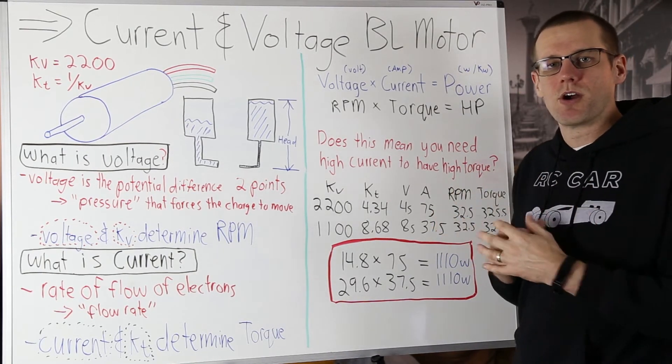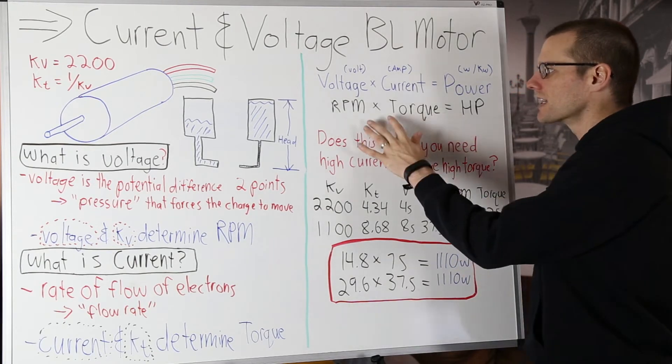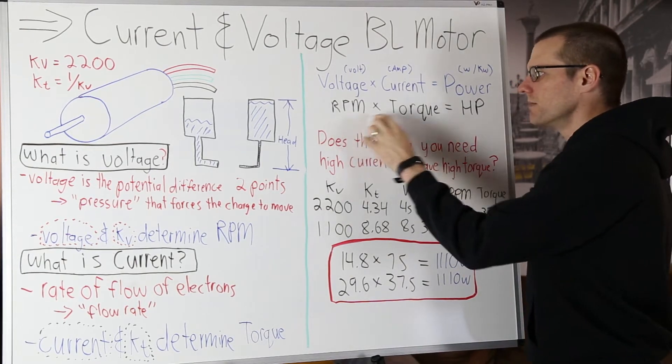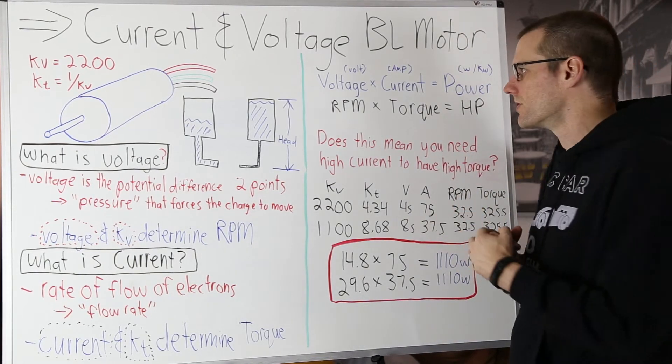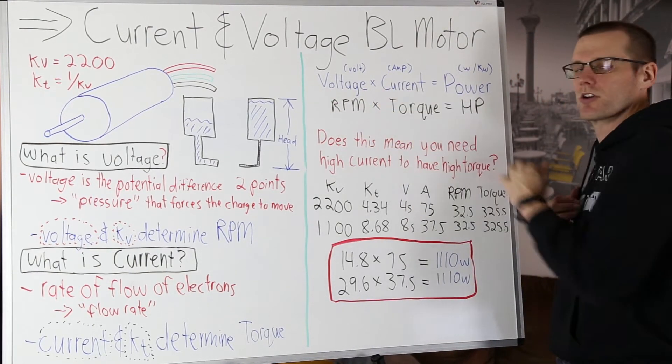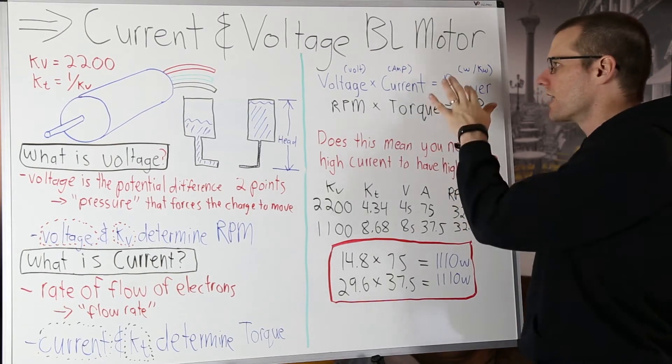Now if you wanted to measure power output of your full-size car this is exactly what you do. You'd measure the rpm. You'd measure the torque and then you calculate the power. Same thing in electrical circuits. We measure the voltage. We measure the current. You don't measure the power. You calculate the power.